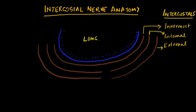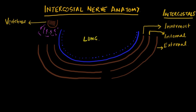The intercostal nerve originates as a continuation of the spinal segmental nerve, which emerges from the intervertebral foramen. As this nerve emerges, it comes into the paravertebral space, which essentially contains a bit of fat. Here, immediately next to the vertebra, it lies between the fat and the parietal pleura.